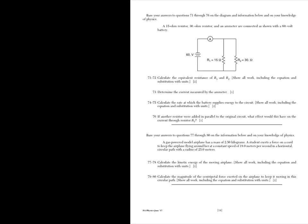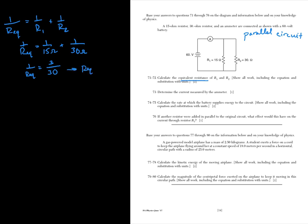Here we have a parallel circuit because there are branches here. So this is a parallel circuit because it's important for us to know which equivalent resistance equation we're going to calculate for. You look at the reference table. The equivalent resistance in a parallel circuit is shown as this. So 1 over 15 ohms plus 1 over 30 ohms. You calculate that. You get 3 over 30. Don't forget to flip it. 10 ohms. And that is your final answer for 71 to 72. You show the equation, substitution with units, and your final answer with units, and that's 71 to 72.